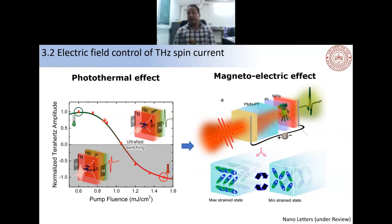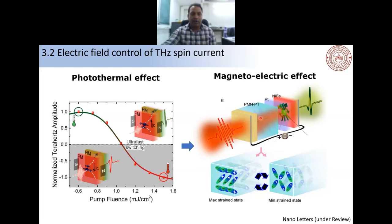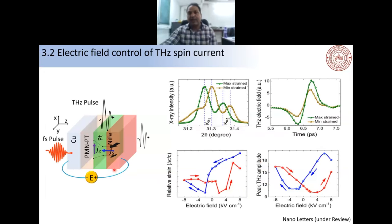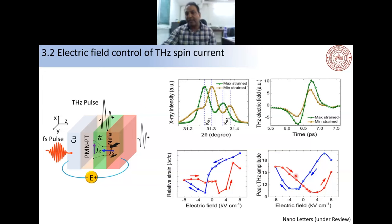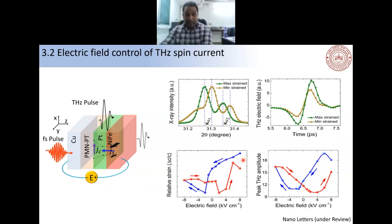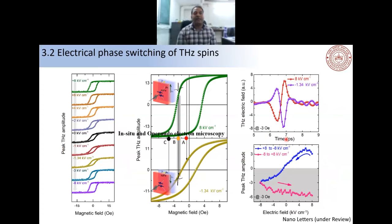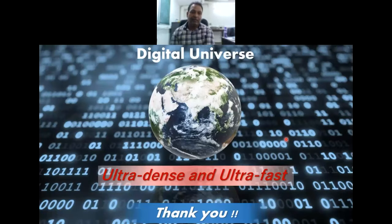We extended this to magneto-electric switching by designing spintronic emitters on PMN-PT substrates. Because of piezoelectric order, we can control strain in PMN-PT by applying electric field. Using X-ray diffraction we confirmed we can control crystal strain as a function of electric field. The terahertz pulse amplitude is modulated as a function of strain, exactly mimicking the butterfly behavior characteristic of strain measurements. By changing only the electric field, we can reverse the phase of the terahertz pulse — electric field phase control switching of THz spin current. This paper is under review in Nano Letters.